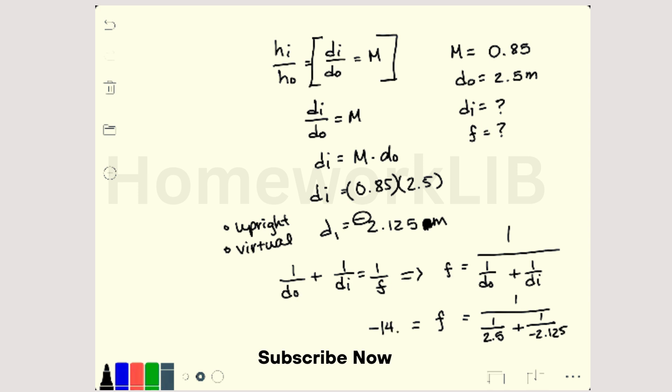Now the fact that this is a negative number tells me that this is a convex mirror. All convex mirrors have negative focal lengths; they are diverging mirrors.